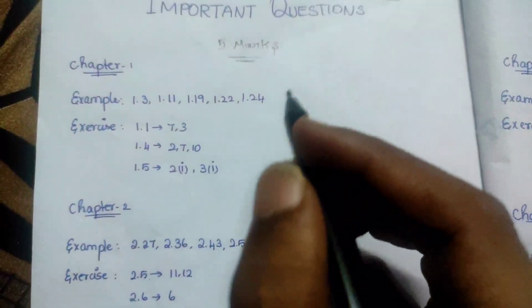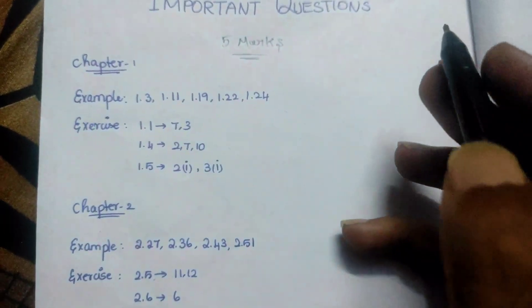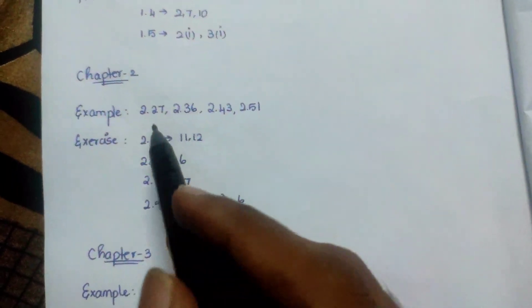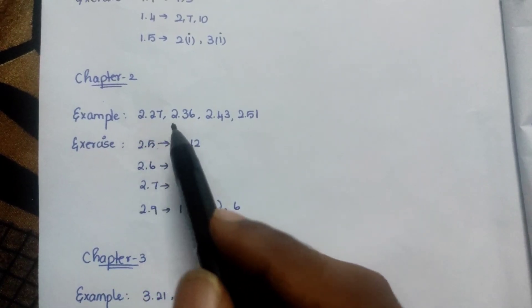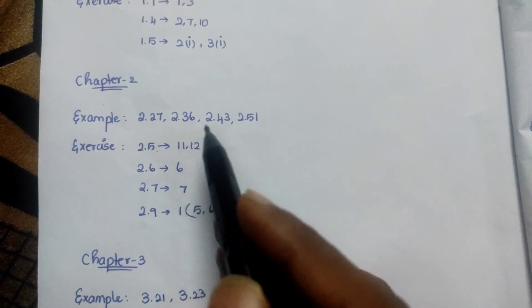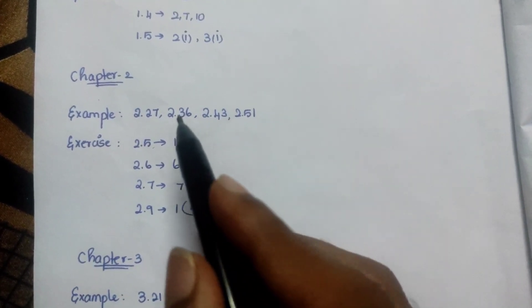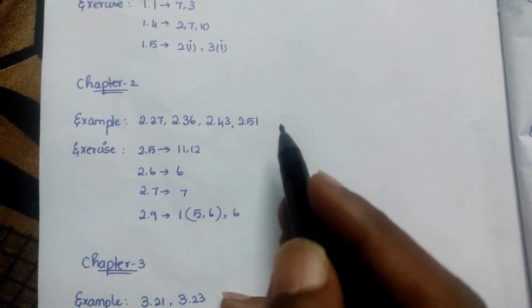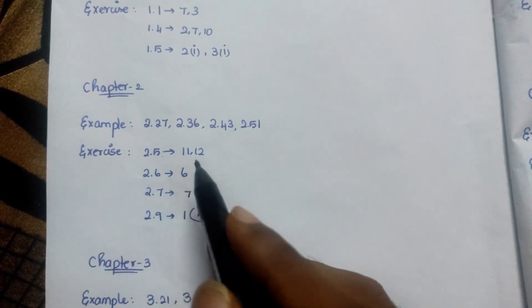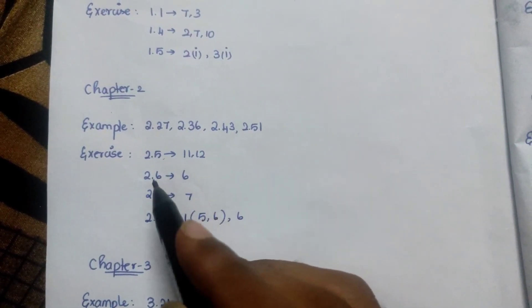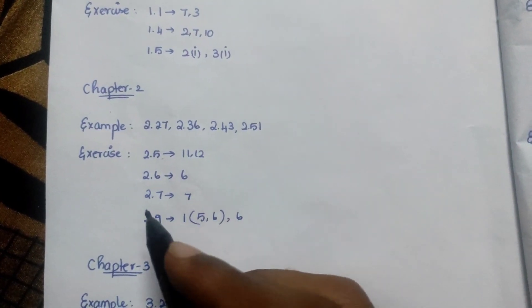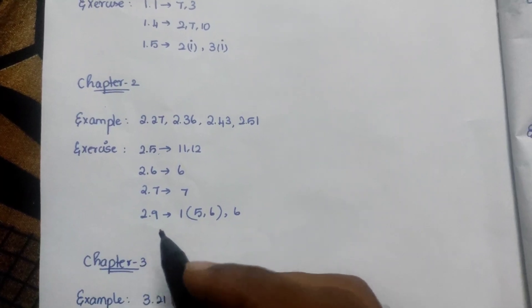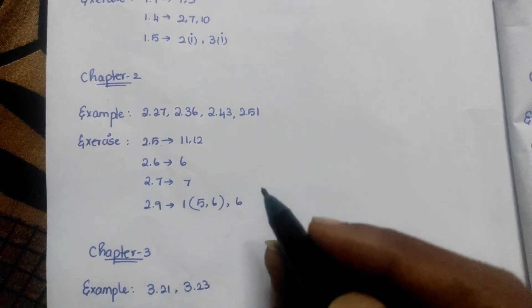If you want to choose a rough note, you can learn easier using this. Chapter 2: Example 2.3, 2.43, 2.5, 2.6, 2.7, 2.9. Exercises 1.56 and 6.